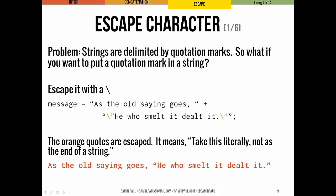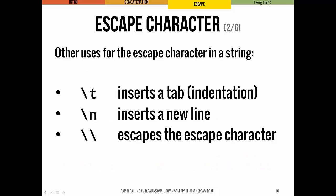We've seen escaping characters before — with new lines and with tabs. Here you can see it with quotes, and this turns out to be really important when we're trying to build strings. The orange quotes in the example are actually escaped by the backslash, meaning just take this literally, not as the end of a string. A couple of the important escape characters other than the quote are: tab, new line, and backslash. We've seen those before as well.